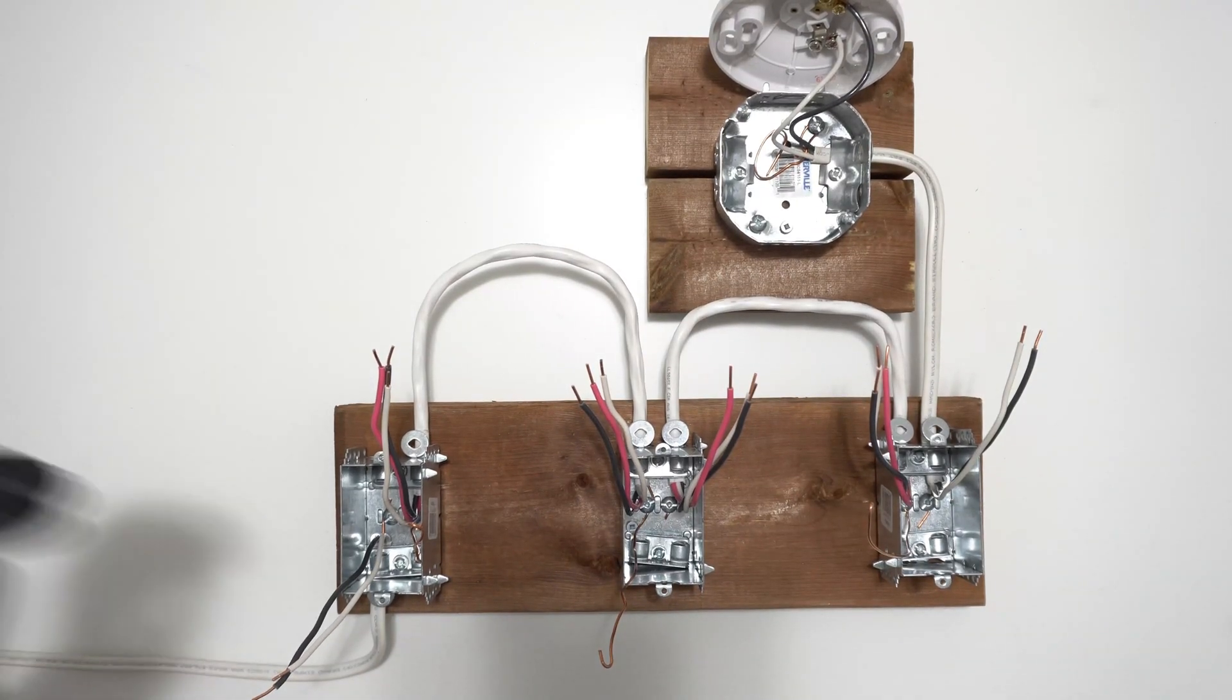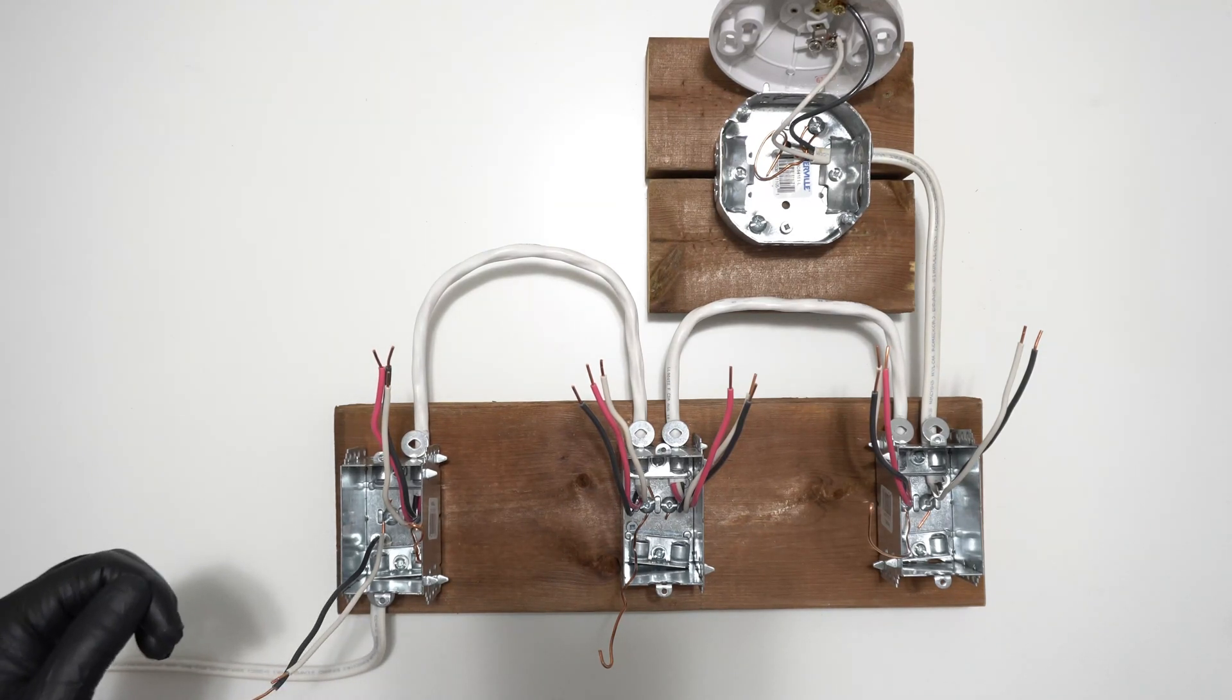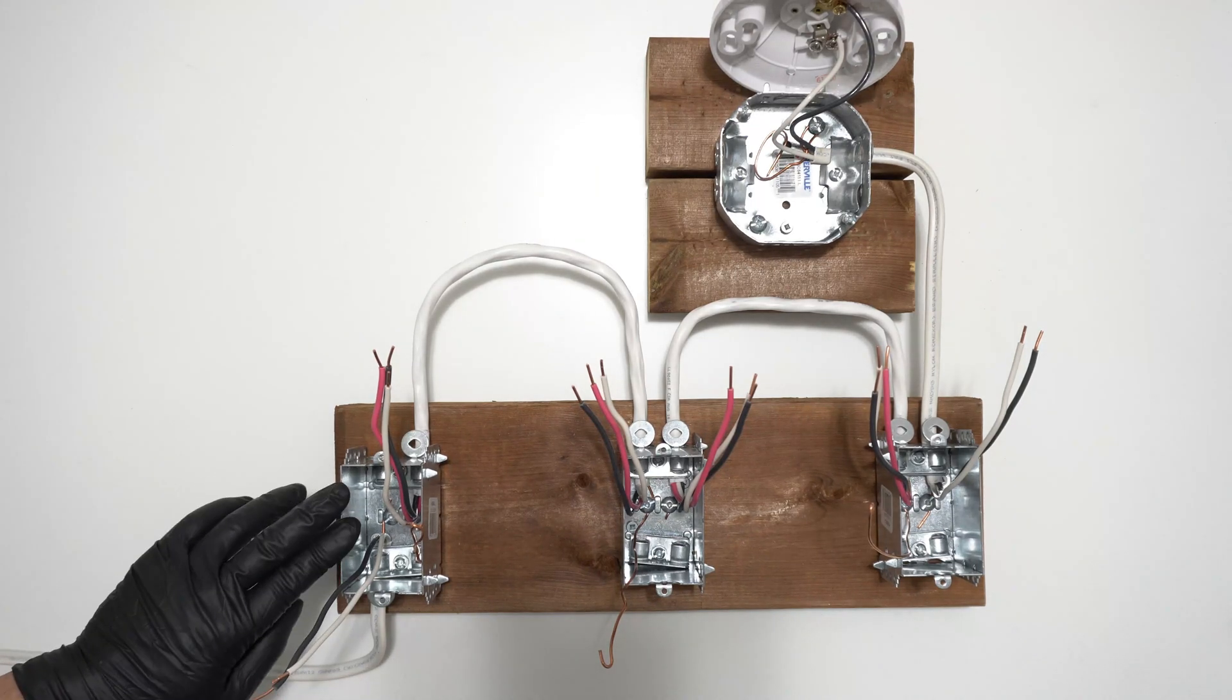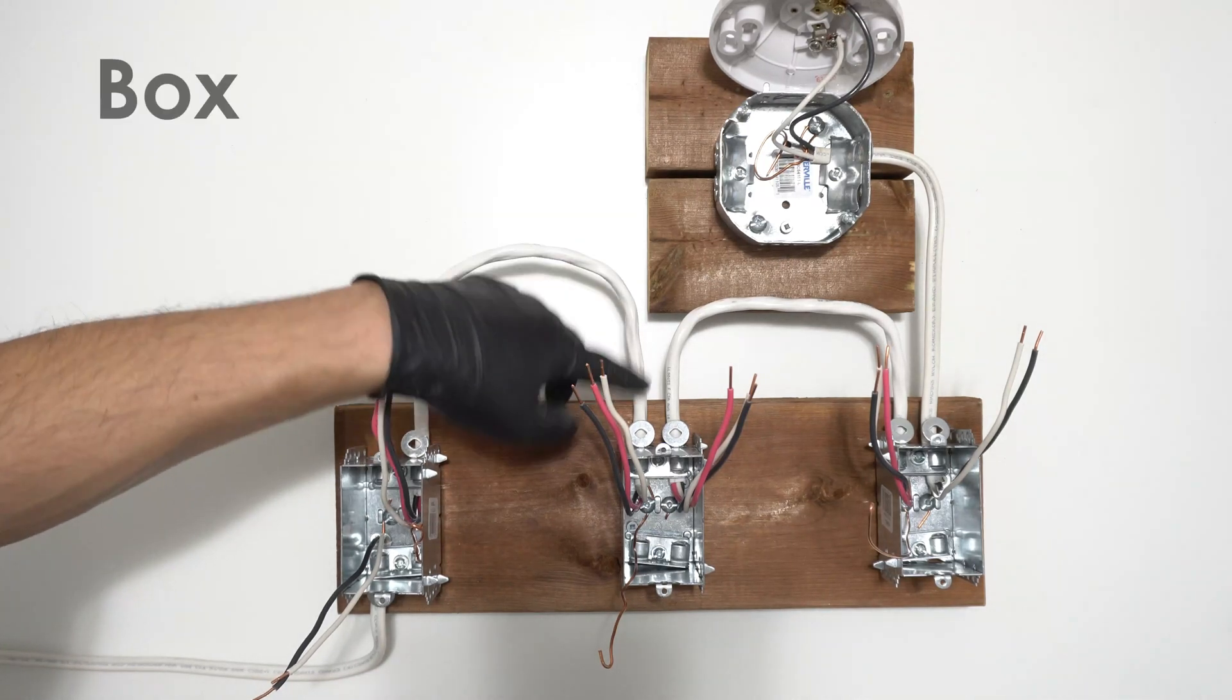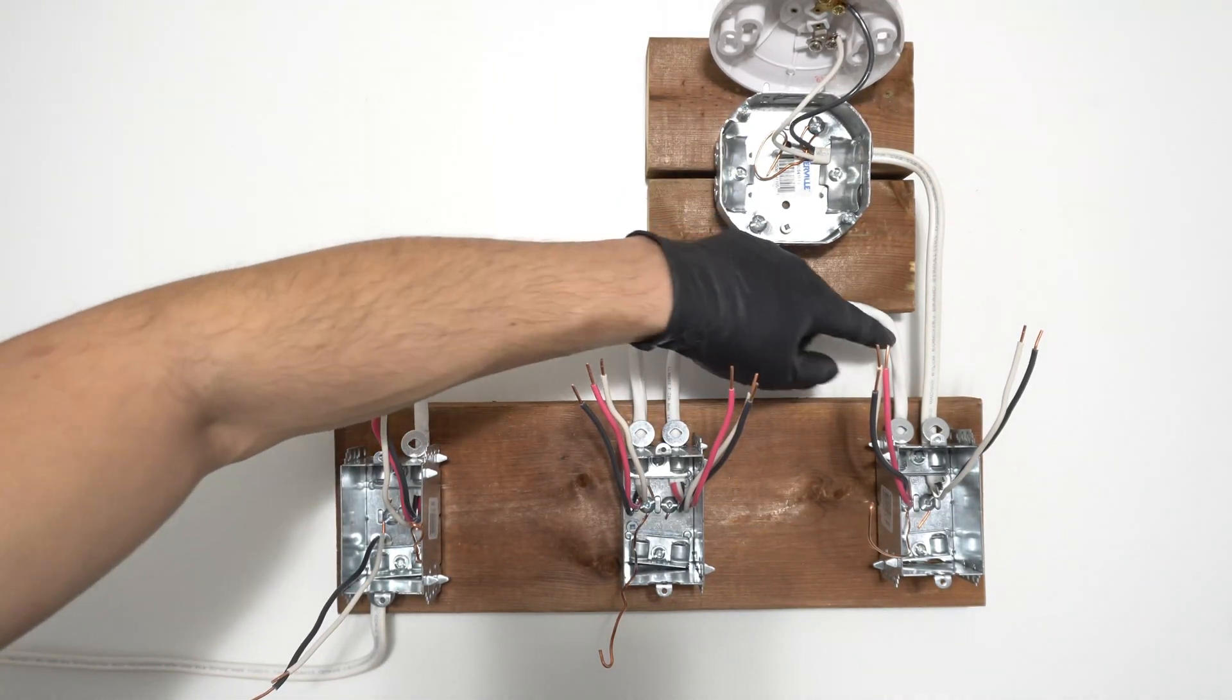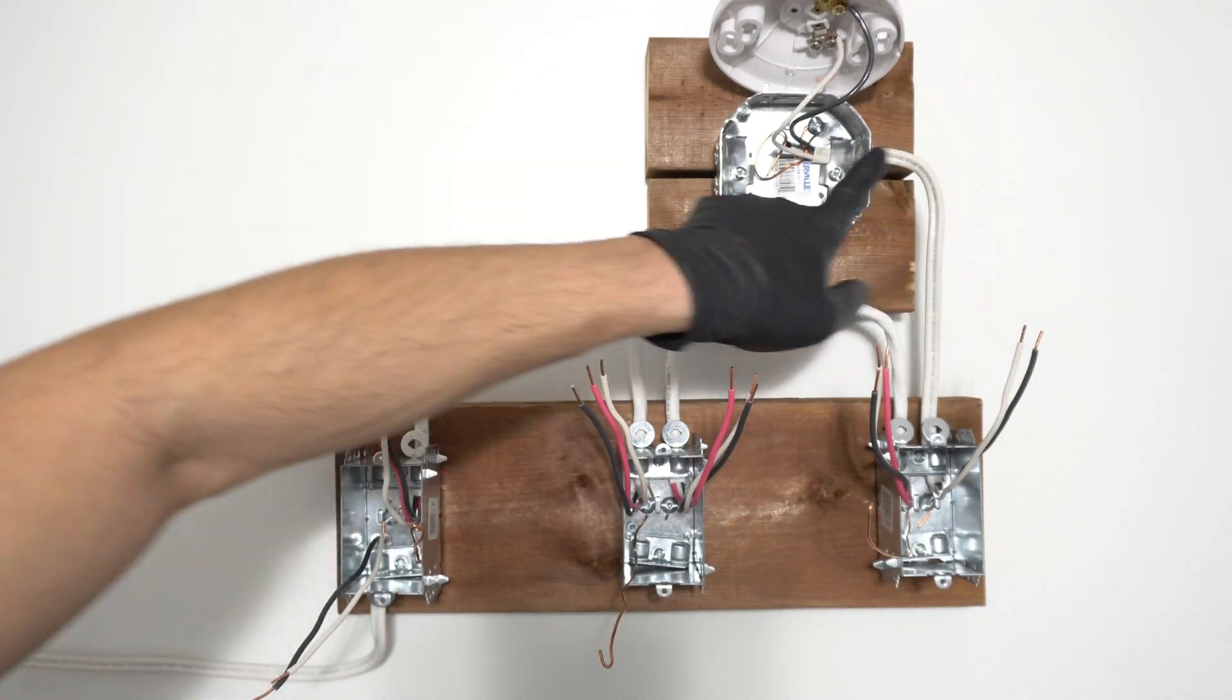In this demonstration we know that this 14-2 is the power source, and if you have drywall the only way to know that this 14-2 is the power source is by using a voltmeter to find a potential difference. The other 14-2 will be coming from the light fixture. Coming out of box A we have a 14-3 wire going into box B, and coming out of box B we have a 14-3 wire going to box C location. Coming out of box C we have a 14-2 going to the light fixture.